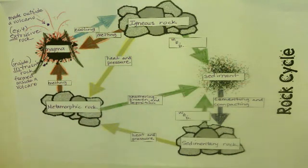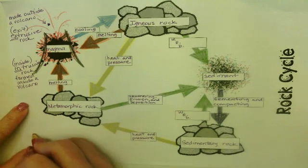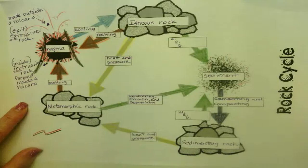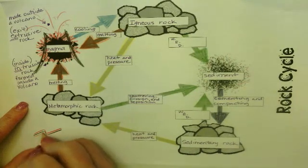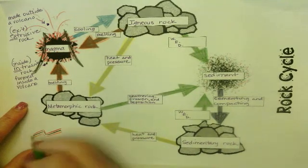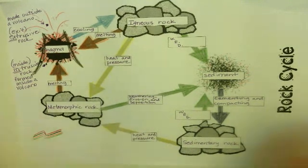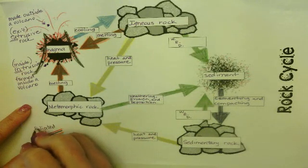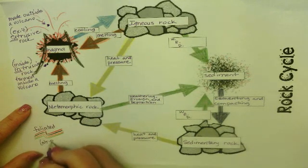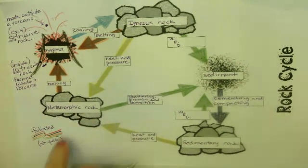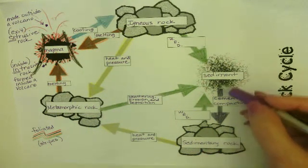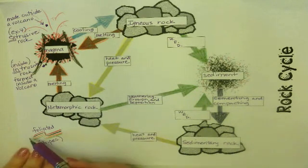One cool feature of metamorphic rocks is something called foliated, which means the rock has stripes. If you see a rock with stripe patterns, it is foliated and that makes it a metamorphic rock. Not every metamorphic rock is foliated, but it is the only rock type that can have those stripes. Sedimentary rocks look more like a chocolate chip cookie — little chunks stuck together.